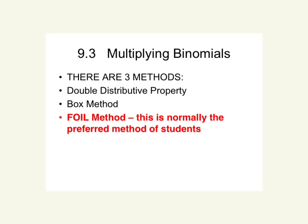Alright, here in chapter 9 section 3 we're going to be multiplying binomials. There are really three methods: the double distributive method, the box method, and the FOIL method. The FOIL method is normally the preferred method of students, but some use the box method. The double distributive property and the FOIL method are really the same thing — the same steps, just a slightly different way of doing it.